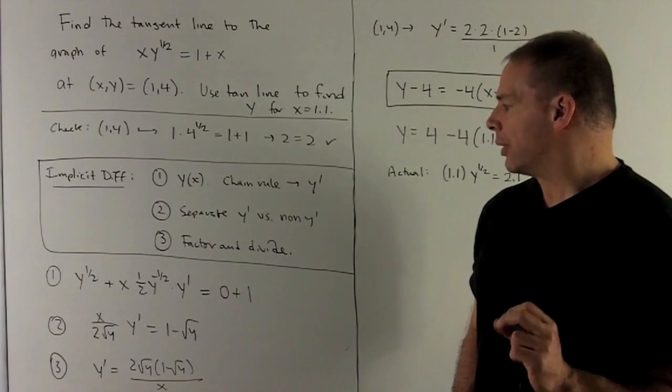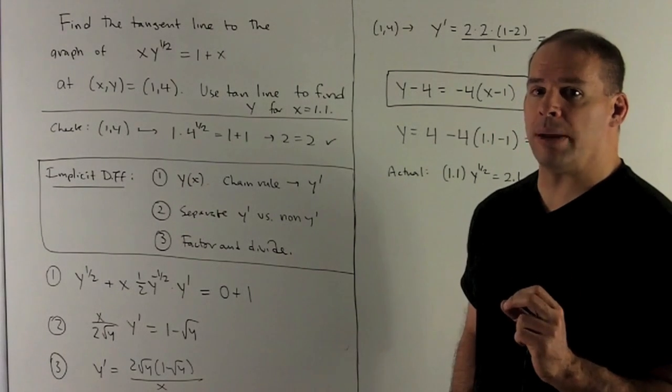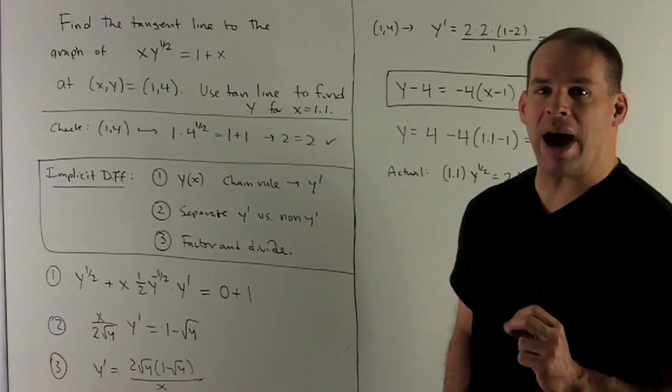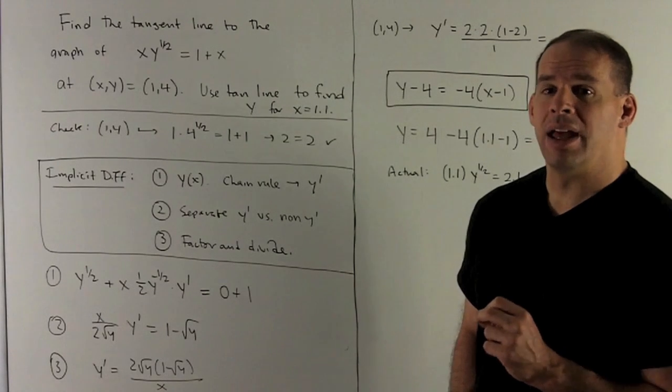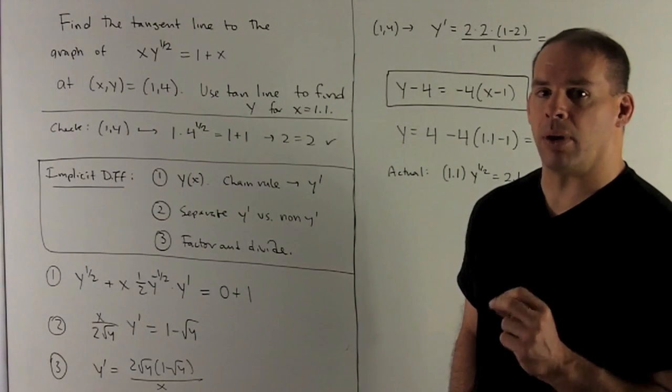Now, what do we do? We're going to separate the y' and non-y' stuff. So that just means putting the y^(1/2) on the other side as a -y^(1/2).